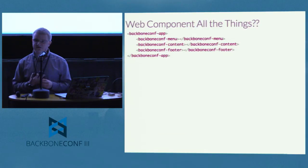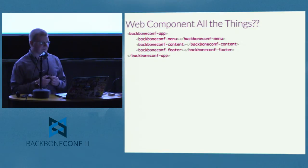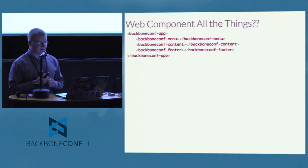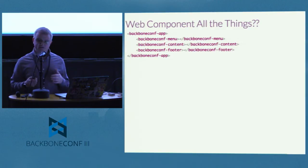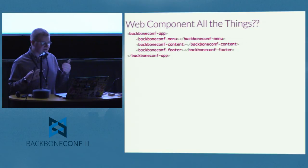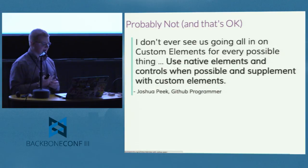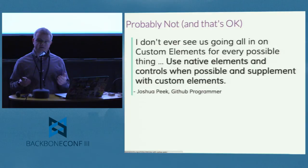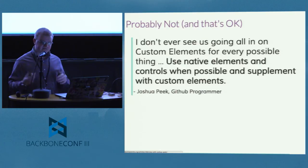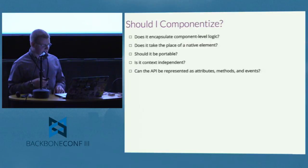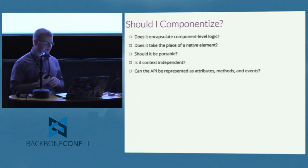What if we took this to its logical conclusion and made everything a web component? People have thought about this, and it's a valid consideration, but I'm not sure it's always the most practical thing. There's still a lot of value from Backbone — application structure, interface with server and data. GitHub recently implemented a custom element in production — just a simple time element — and one of their engineers said they don't see ever going to custom elements for everything. I agree: use native functionality where available, then supplement and extend that with custom elements.